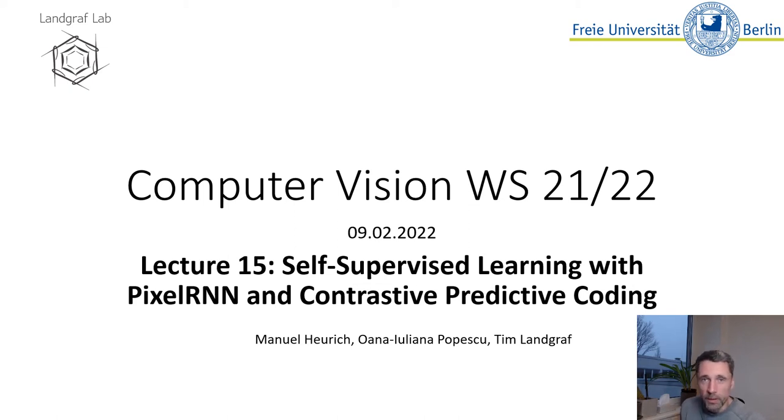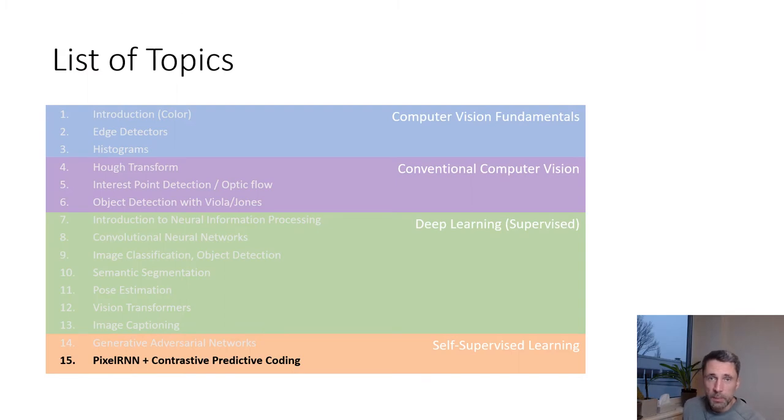Welcome everyone. This is our last lecture in computer vision. Today I'm going to show you pixel RNNs and contrastive predictive coding. CPC and pixel RNNs are concluding the self-supervised learning block and concluding the entire class.